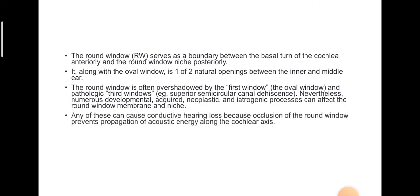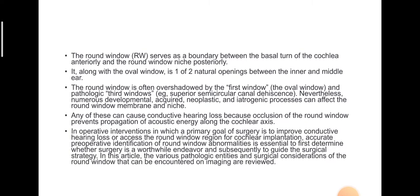Any of these can cause conductive hearing loss because occlusion of the round window prevents propagation of acoustic energy along the cochlear axis. In operative interventions where the primary goal is to improve conductive hearing loss or access the round window region for cochlear implantation, accurate preoperative identification of round window abnormality is essential to determine whether surgery is worthwhile and to guide the surgical strategy. In this article, various pathologic entities and surgical considerations of the round window encountered on imaging are reviewed.